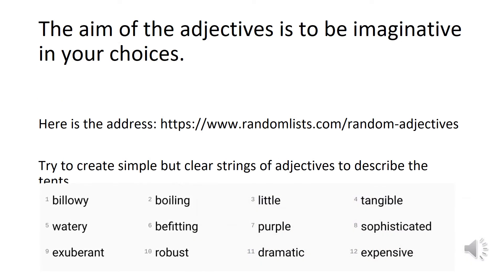So you can just go free here — be completely wild. Take risks. Use your adjectives, but be imaginative about it. See if you can be inventive. Think out of the box. Describe things in a really interesting, insightful way. Just like we were looking at the random noun generator, if you go onto that same site you can also generate some adjectives. What you're going to do is try to create some simple but clear strings of adjectives to describe the tents.